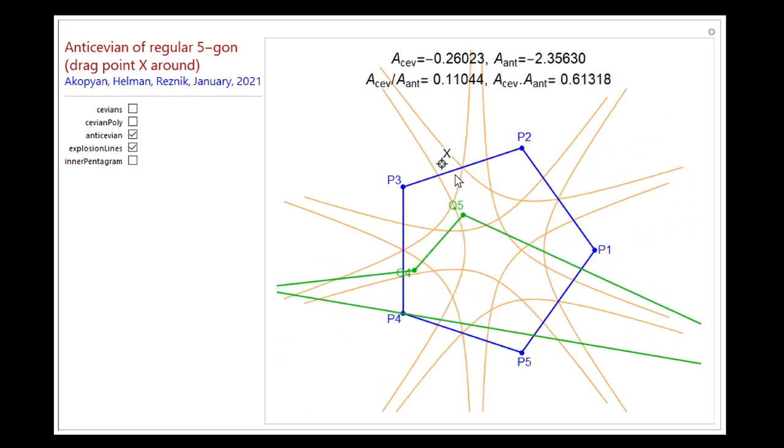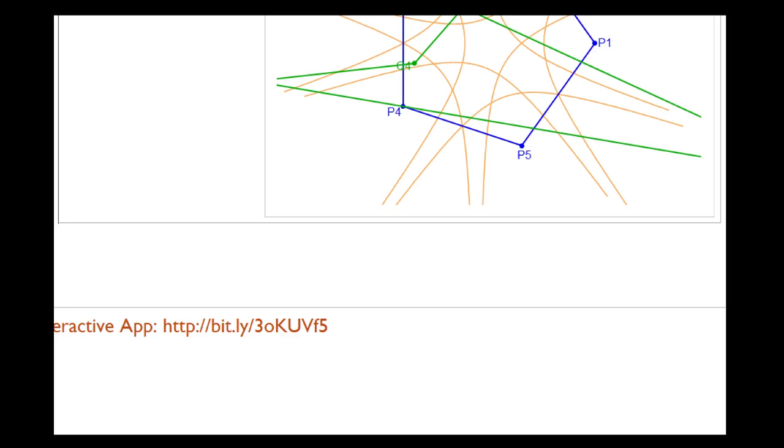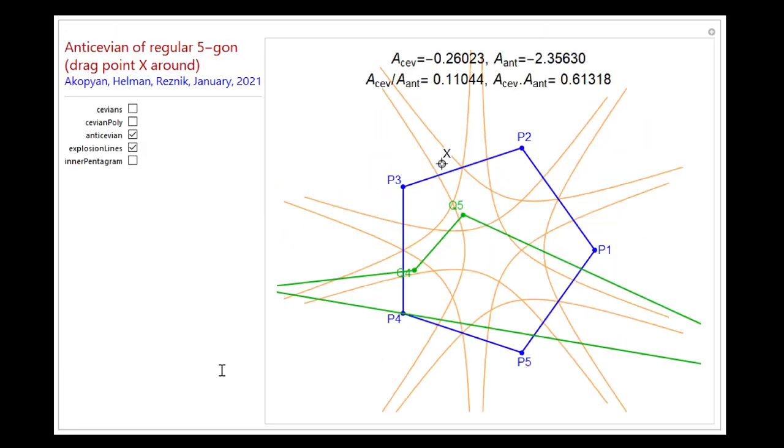In fact, you guys can explore this yourselves. You can go to this address here: bit.ly and it's 3, then lowercase o, capital K, capital U, capital V, lowercase f, number 5. And you can go to this bit.ly address. And I've published this thing as a Mathematica application. It's not as fast or interactive as this one, but you're going to have the same functionality.